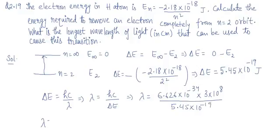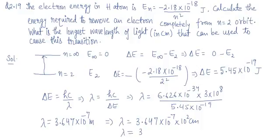So lambda in this case turns out to be, it will come in meters since all are SI units, 3.647 into 10 to the power minus 7 meters. It is asked in centimeter, so 1 meter equals 100 centimeter. 3.647 into 10 to the power minus 7, and 1 meter equals 100 centimeter. So lambda in centimeter is 3.647 into 10 to the power minus 5 centimeter.